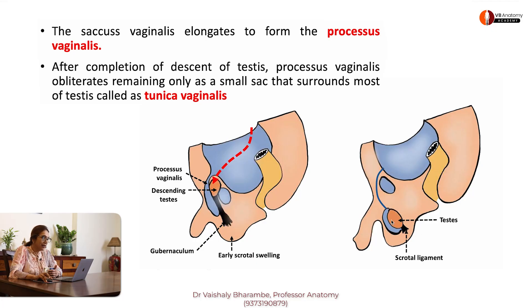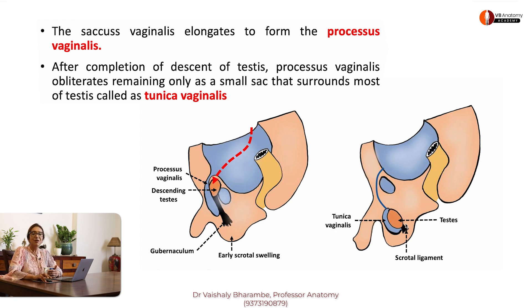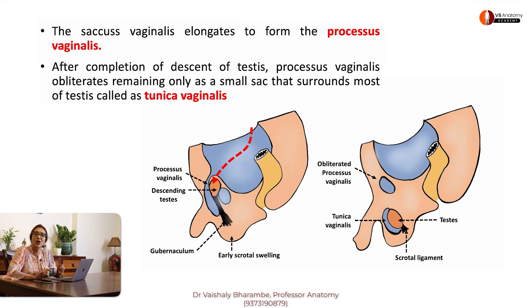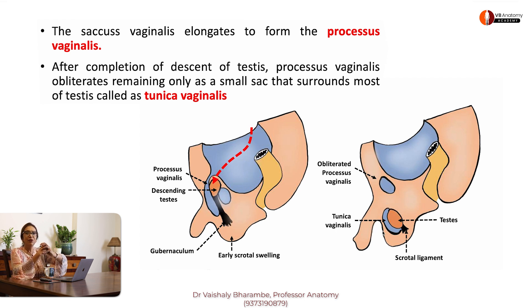The testes has finally found its way into the scrotum. The processus vaginalis has got obliterated. That's the processus vaginalis getting obliterated and leaving behind a little sac called tunica vaginalis, which kind of surrounds the testes.